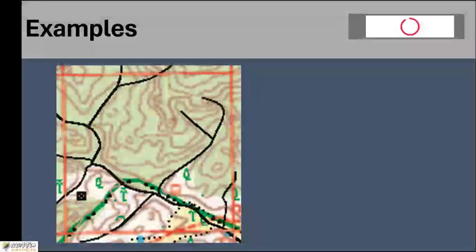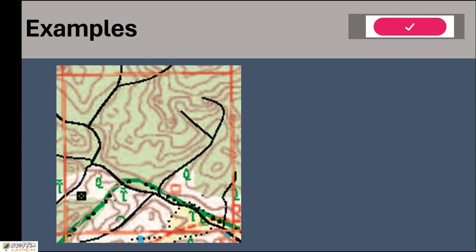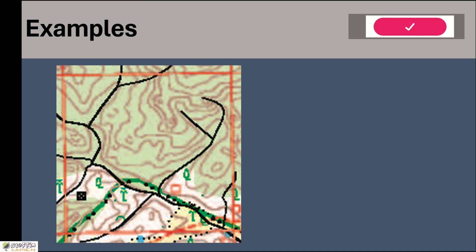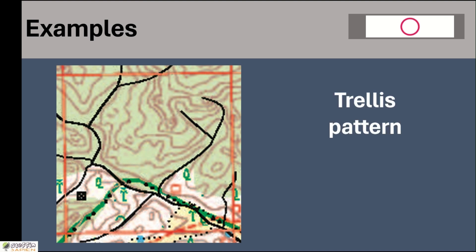Here it may look like dendritic, but when you observe closely you will understand that the tributary streams are joining the mainstream at 90 degree angle. Look at the main river flowing through the center from northwest to southeast, and the tributaries joining the mainstream at 90 degrees — their own tributaries also join them at 90 degrees. So this is an example of trellis drainage pattern.